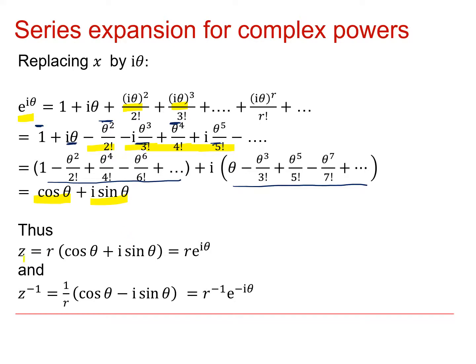So if we have a complex number z whose modulus and argument we know, we can write it as r cos theta plus i sine theta. But from this series expansion up here I now see that I can write this as r e to the i theta.